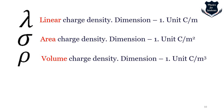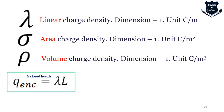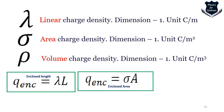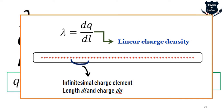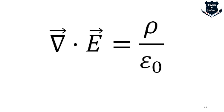Charge density represents how crowded or dense the charges are at a specific point. Lambda is the linear charge density, sigma denotes area charge density, and rho denotes volume charge density. If it is an enclosed length L, we multiply by lambda; enclosed area A, we multiply by sigma; and enclosed volume V, we multiply by rho. For curved surfaces, integrals are used instead.